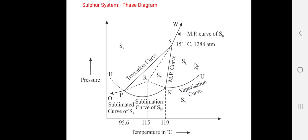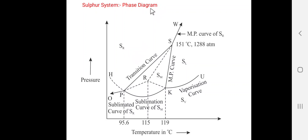In the phase diagram of the sulfur system, there are four areas exhibiting four different phases. The first area is O-P-K-U, which represents the vapor phase, that is sulfur vapor. The second area is U-K-S-W, representing liquid sulfur (SL). The third area is P-K-S, representing monoclinic sulfur (SM). The fourth area is above O-P-S-W, representing rhombic sulfur (SR).